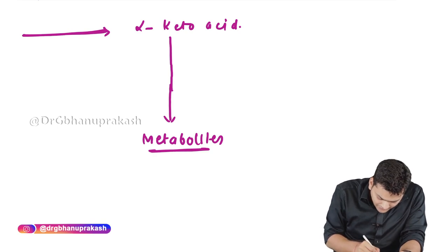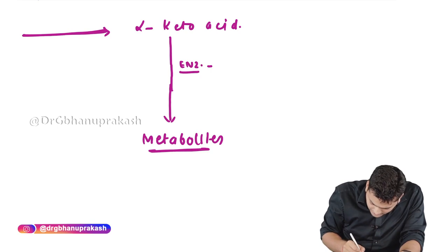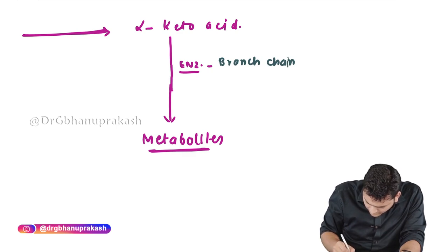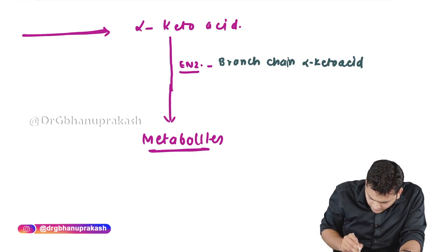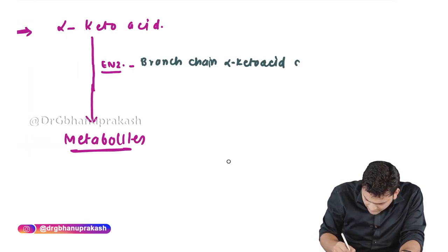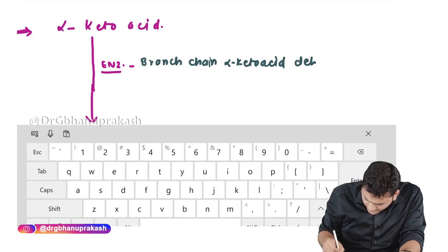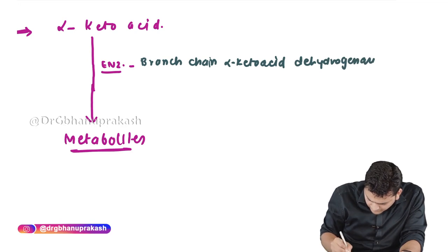The enzyme required for this reaction — converting the branched-chain amino acids into their respective alpha-keto acids and then to ultimate metabolites — is called the branched-chain alpha-keto acid dehydrogenase complex.